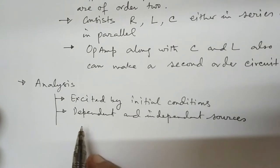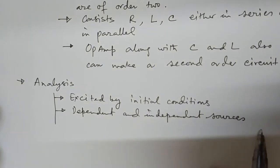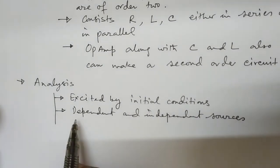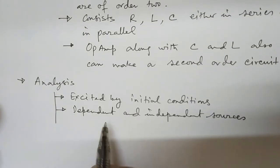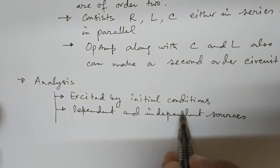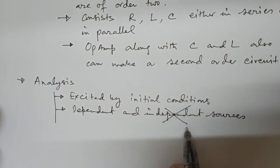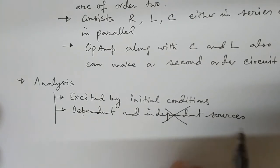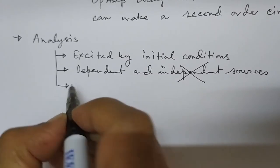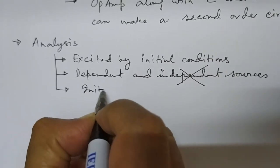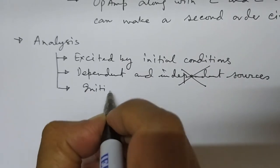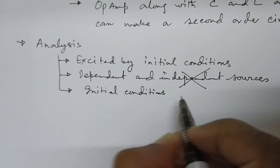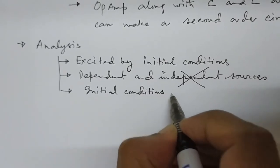These circuits have only dependent sources and no independent sources, so they are source-free circuits. For finding the initial conditions, we have to remember two points.